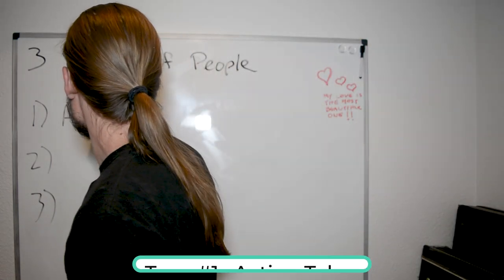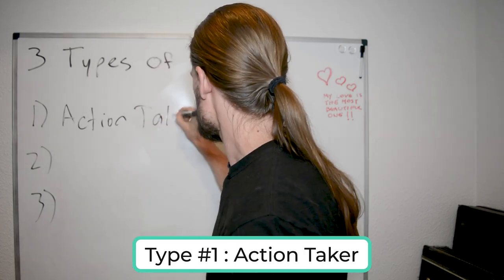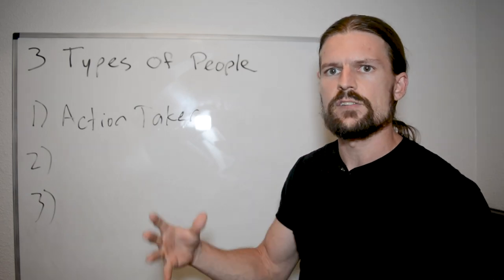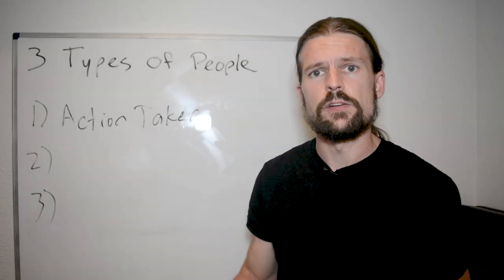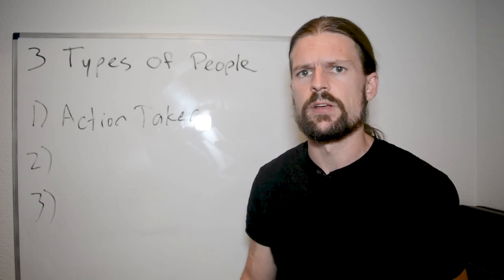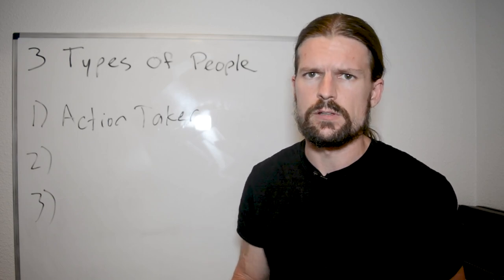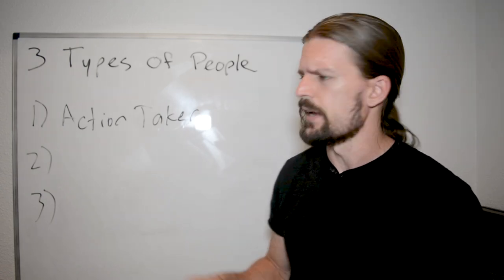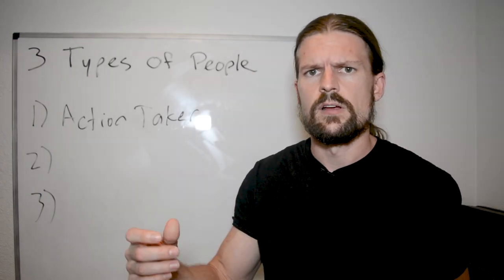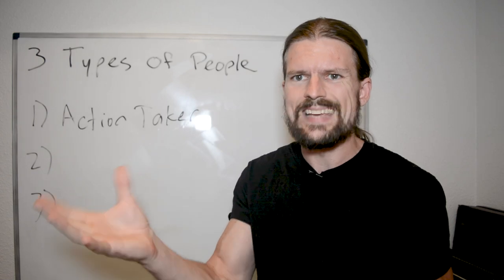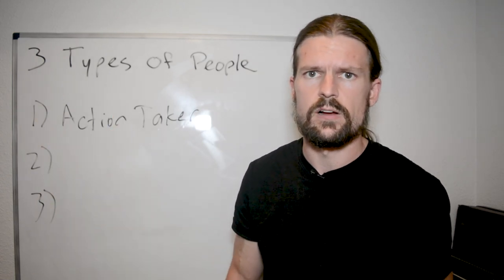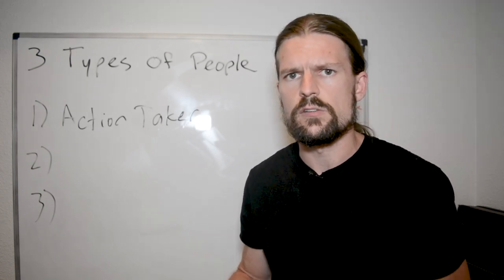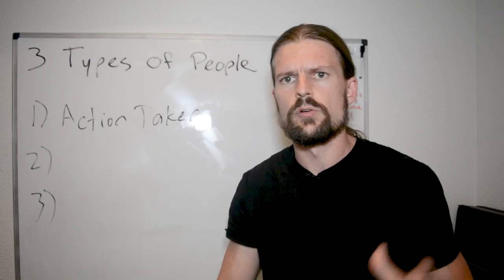So type number one is the action taker. This is the person who comes up with an idea, who sees an opportunity, who finds something that is likely to pay off, especially when it comes to asymmetric risk reward. And I did a video all about that recently. But the basic gist of it is that the action taker will take action on opportunities where the potential gain is much greater than the potential loss. Because just about everything that you do has some risk.